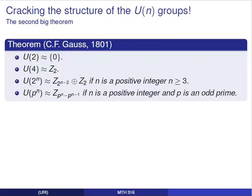The second theorem deals with the groups of units for specific situations. This theorem is due to Gauss in 1801. He showed that U(2) is isomorphic to the trivial group; U(4) is isomorphic to Z2; U(2^n), where n ≥ 3, is isomorphic to Z_{2^(n-2)} × Z2. And U(p^n) is isomorphic to Z_{p^n - p^(n-1)}, assuming that p is an odd prime and n is a positive integer.